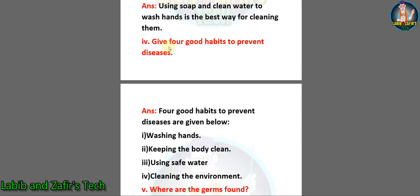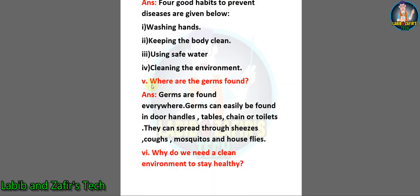Number four: give four good habits to prevent diseases. Answer: four good habits to prevent diseases are — number one, washing hands; number two, keeping the body clean; number three, using safe water; number four, cleaning the environment. Number five: where are the germs found? Answer: germs are found everywhere. Germs can easily be found in door handles, tables, drains or toilets. They can spread through sneezes, coughs, mosquitoes and house flies.